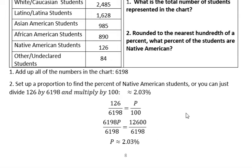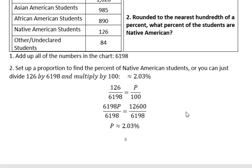Divide by the coefficient, which here is 6,198, and that gives you a percent rounded to the nearest hundredth of 2.03 percent. In the next video, we'll look at percent increase and percent decrease, which is a little tricky. Have a great day!